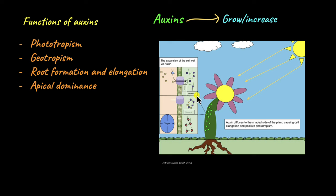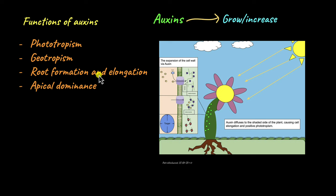Geotropism, which is the bending of the plant in response to gravity, is also governed by auxins. The shoot grows against gravity while the root grows in the direction of gravity. Auxins are also involved in the formation of roots — they act on the root primordial cells and cause root formation and elongation of roots.